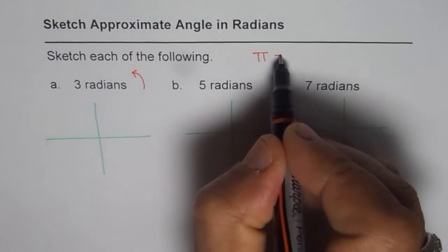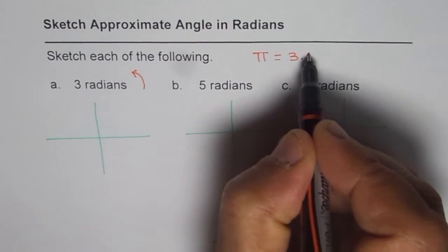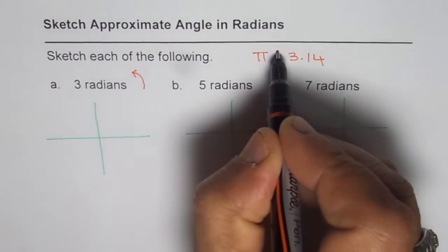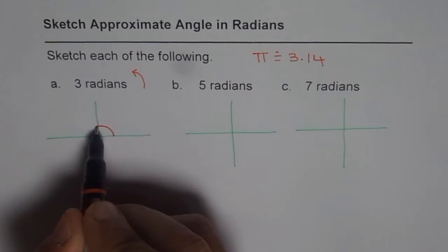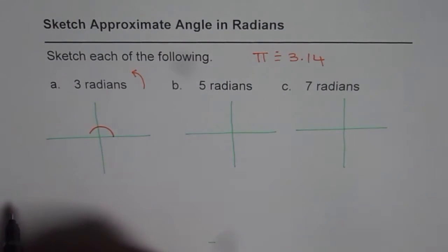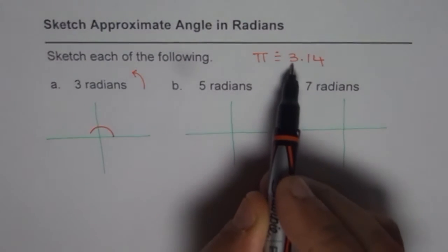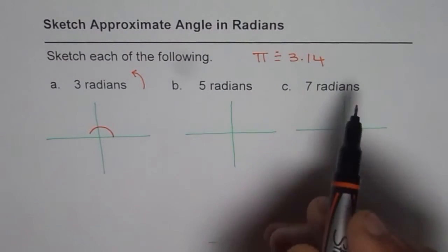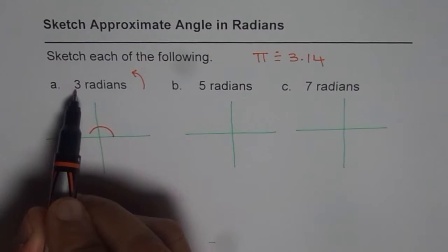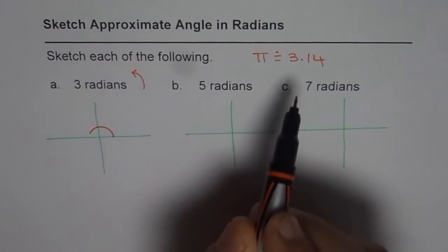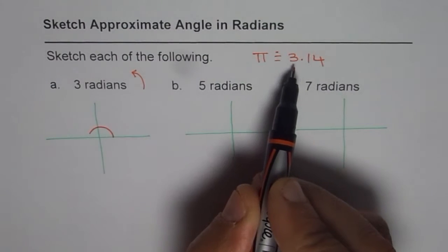Value of π is 3.14 approximately, is that ok? That means if I go all the way from here till the end, it is going to be 3.14 radians. Do you understand? But where we are, we want to make an angle which is 3 radians, 0.14 less than 3. That is what 3 radians is right.